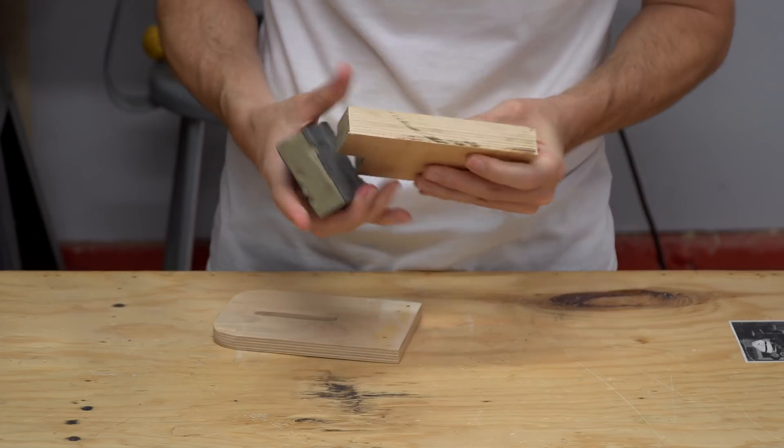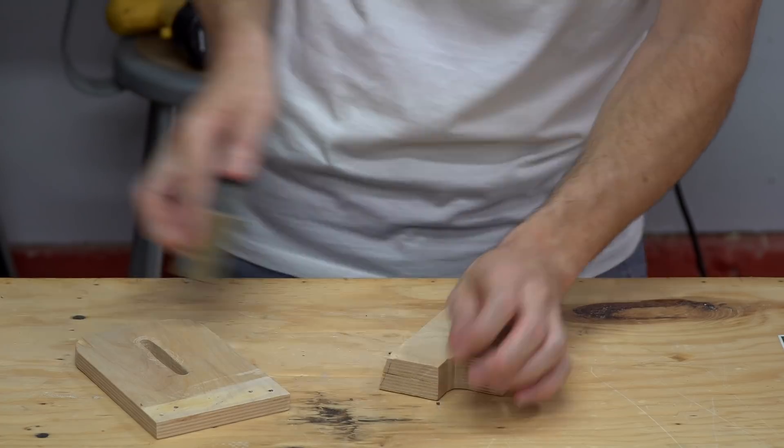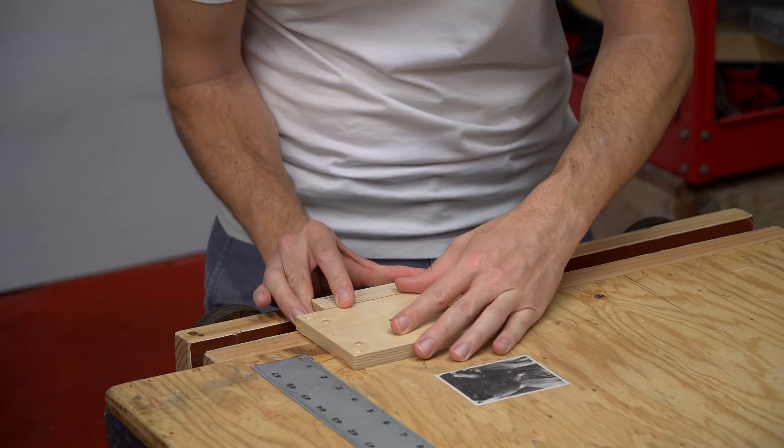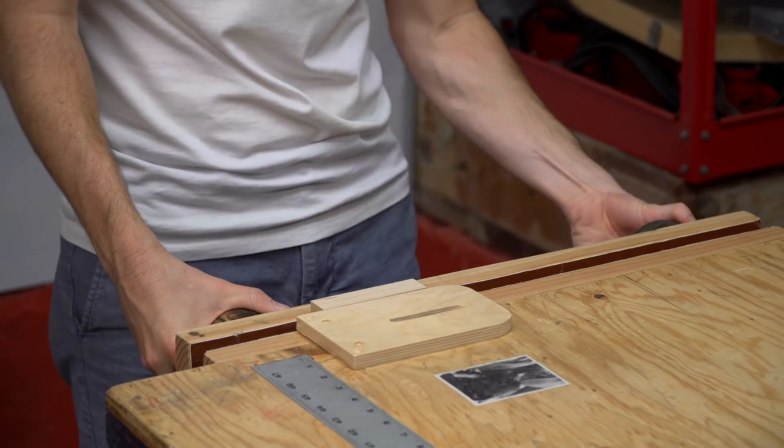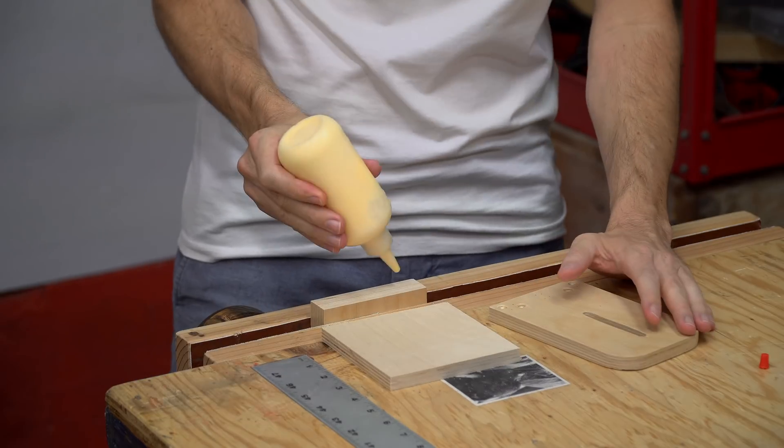I just quickly cleaned up the edges of the cuts with a sanding sponge and then set out to reattach the two pieces. Just like before, I used glue and pins.